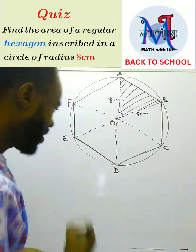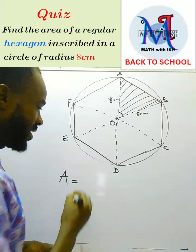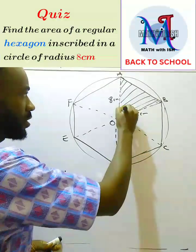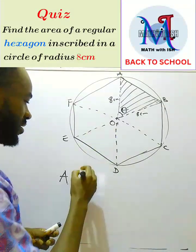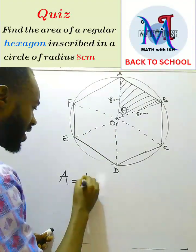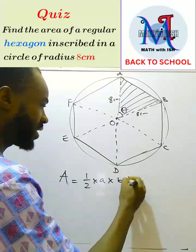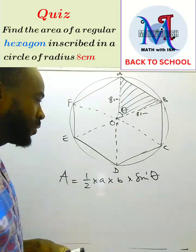Now the area of the triangle, whenever you are given two sides and an included angle - there's an angle here, angle θ - whenever you are given angle θ, the formula to use is ½ times a times b times sin θ. This is the formula to use.